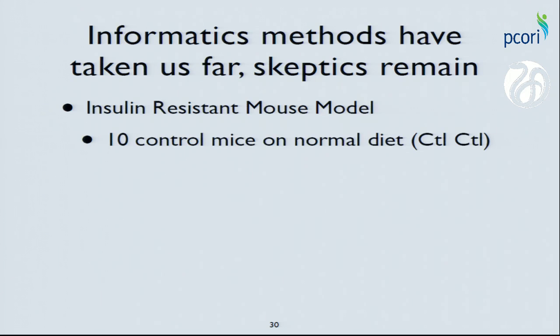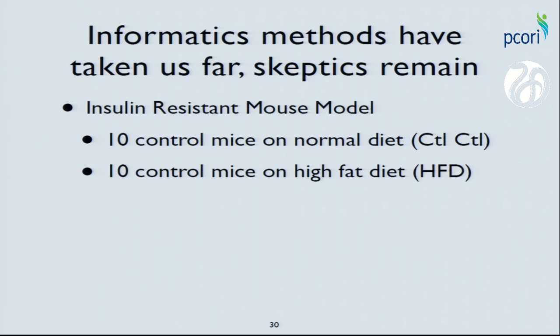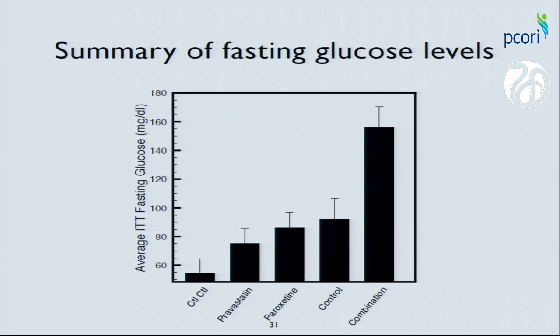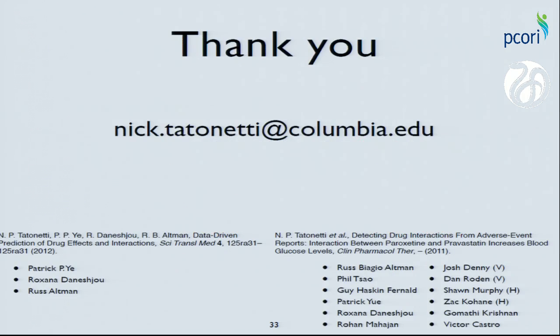Informatics has taken us very far, but ultimately we need to go into a model system. We had 10 control mice and 10 mice on a high-fat diet simulating prediabetes — fed butter and Sprite — making them insulin resistant within 30 days. Giving the high-fat-diet mice pravastatin, paroxetine, or the combination, we saw approximately a 60 mg/dL increase in blood glucose for the combination, mirroring the diabetic patient findings. In summary: we can correct for hidden covariate biases, infer latent effects not observed in data, and corroborate findings in other observational data sets or validate them in model systems.